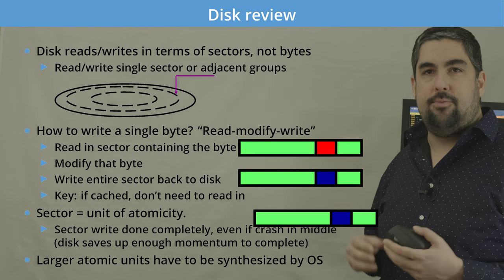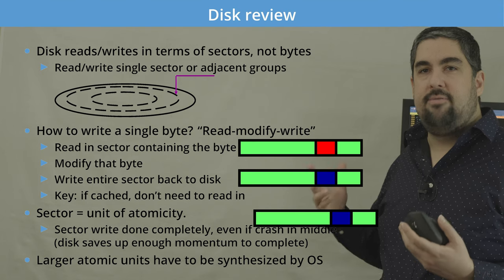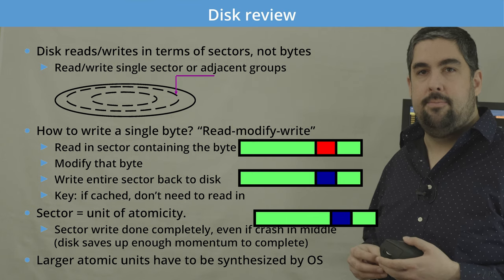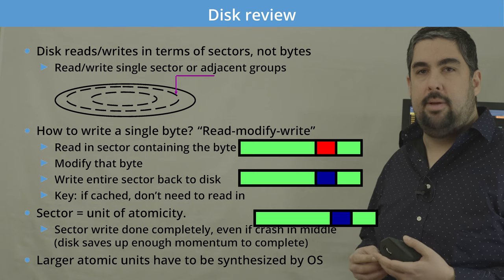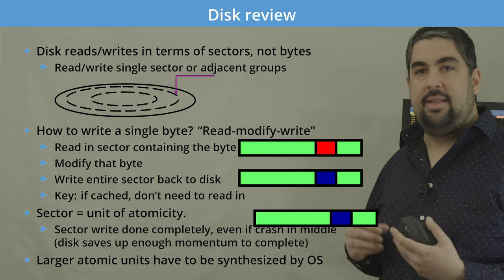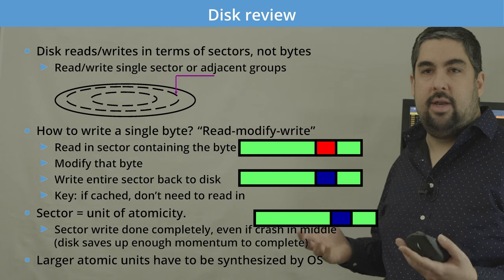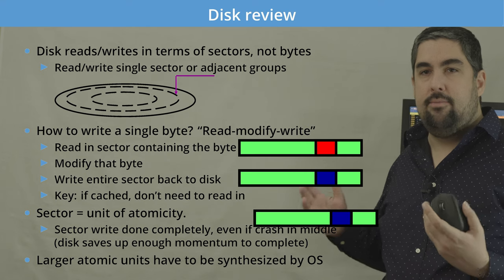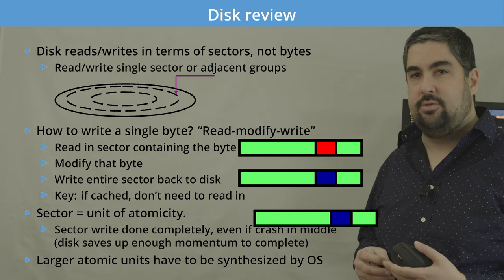Disk reads and writes are sector-oriented — you modify an entire sector, which is typically 512 bytes or 4 kilobytes. Whenever you want to modify something smaller, like a single byte, you read the entire sector, update that byte, and then write the entire sector back. If it's already cached you might not have to read it, but you still have to write the entire sector. You can't write less than a sector; that's not part of the model of how disks and most flash devices work.